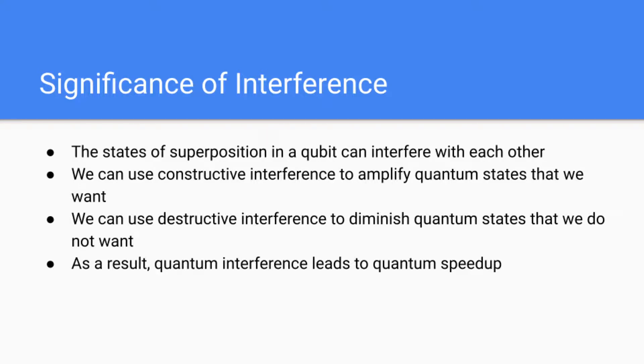So what is the significance of interference? Firstly, the states of a superposition in a qubit can interfere with each other. As a result, we can use constructive interference to amplify quantum states that we want, and we can use destructive interference to diminish quantum states that we do not want to almost 0%. As a result, quantum interference can lead to quantum speedup, as we can amplify the states that we want to almost 100% certainty, and diminish the quantum states that we do not want to almost 0%.